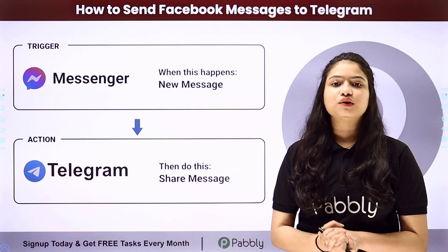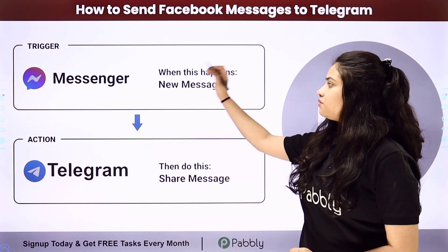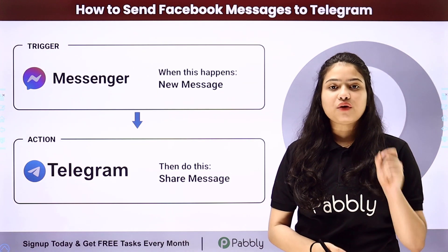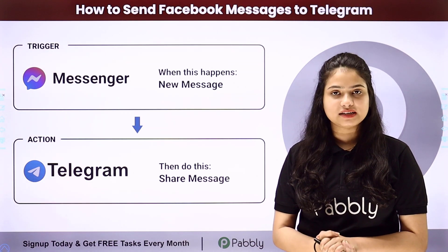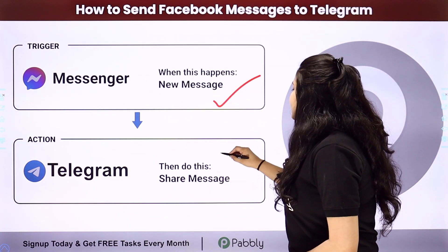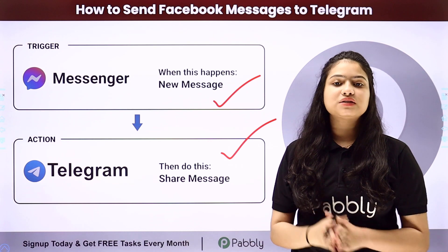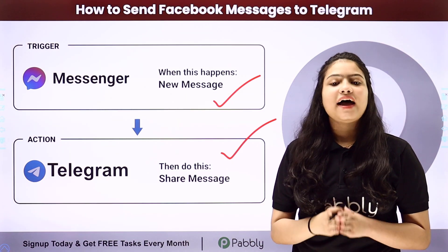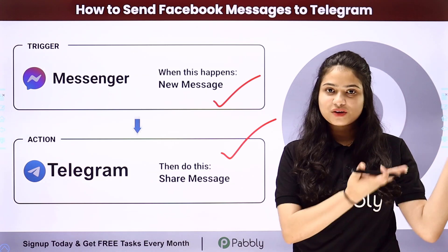So how are we going to automate this entire process? For this, we will have to build a connection between these two applications, and that we are going to do without any coding or programming skills with the help of an amazing automation software, Pabbly Connect. Here we have Facebook Messenger in our trigger and Telegram in our action, and we are going to connect both of them using Pabbly Connect. Let me take you all to my screen.